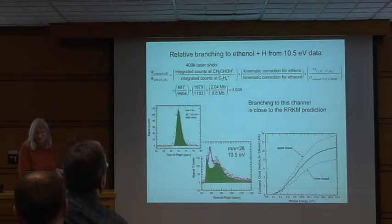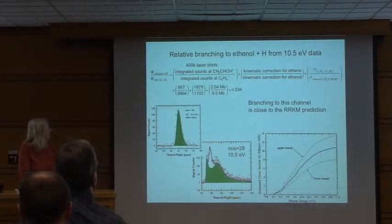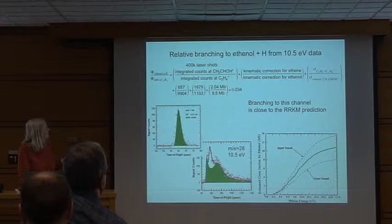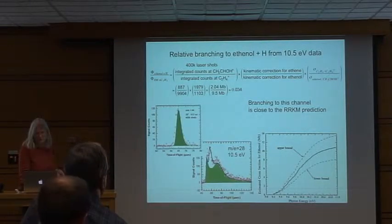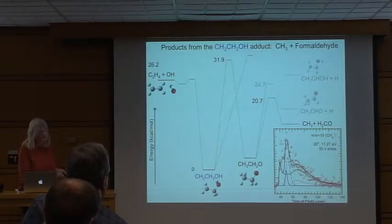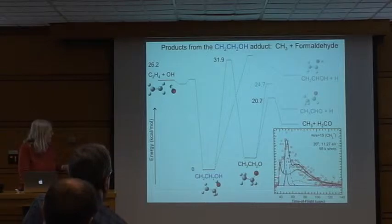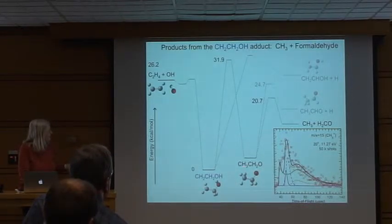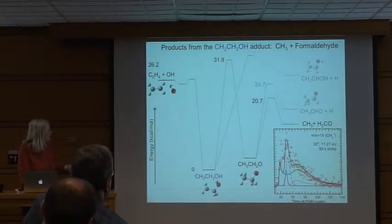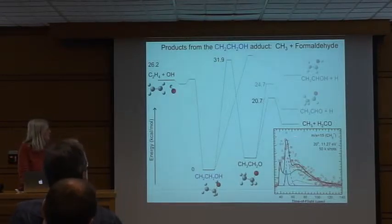We can get branching ratios doing lots of kinematic corrections and using Terry Kuhl's estimate for the photoionization cross-section of phenol. You can also look at the methyl plus formaldehyde channel, associated with the isomerization where the hydrogen on the OH goes over to the radical center here to give the ethoxy radical. The ethoxy radical can break at the C-C bond to give a methyl radical plus formaldehyde. You can detect that signal, though it's not very big.